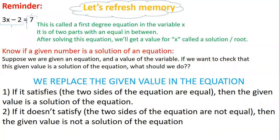It applies to a normal equation — like 3x minus 2 equals 7, which is a normal equation — and it applies to any equation.